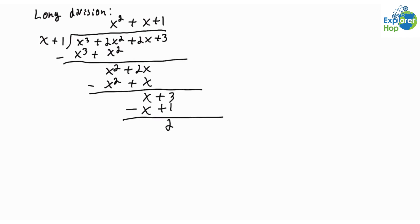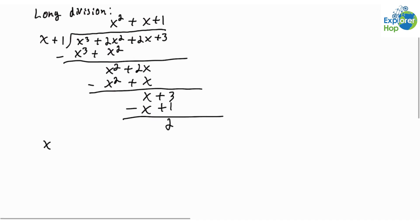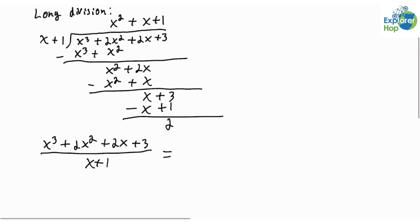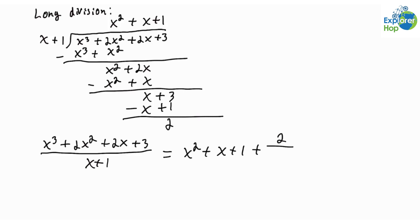So this means that x cubed plus 2x squared plus 2x plus 3 over x plus 1 is equal to x squared plus x plus 1, which is the quotient, plus the remainder, which is 2, over the divisor, which is x plus 1.